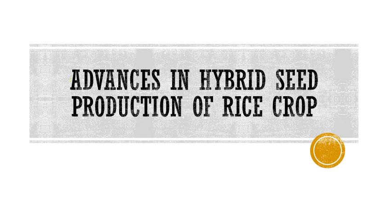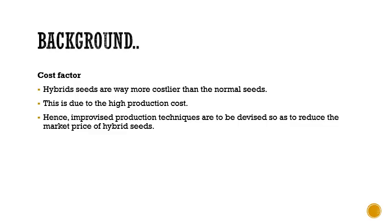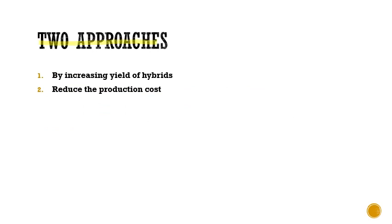Today we are going to see about advances in hybrid seed production of rice. Coming to the background, the cost factor is the major hurdle. Hybrid seeds are way more costly than normal seeds, and this higher cost is due to the higher production cost. Hence, improvised production techniques need to be devised to reduce the market price. There are two main approaches to increase feasibility: increasing the yield of hybrids, or reducing the production cost.